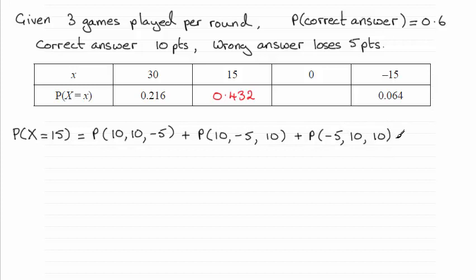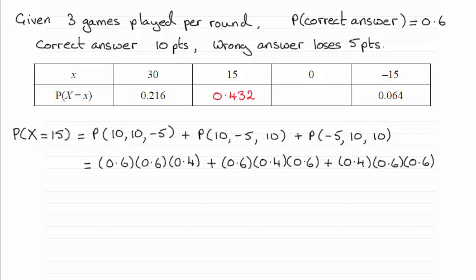All you need to do is fill in the various probabilities. Remember that in any one of these you would multiply the probabilities together. If you do that, you should have this calculation, and that will total the answer 0.432 as required.